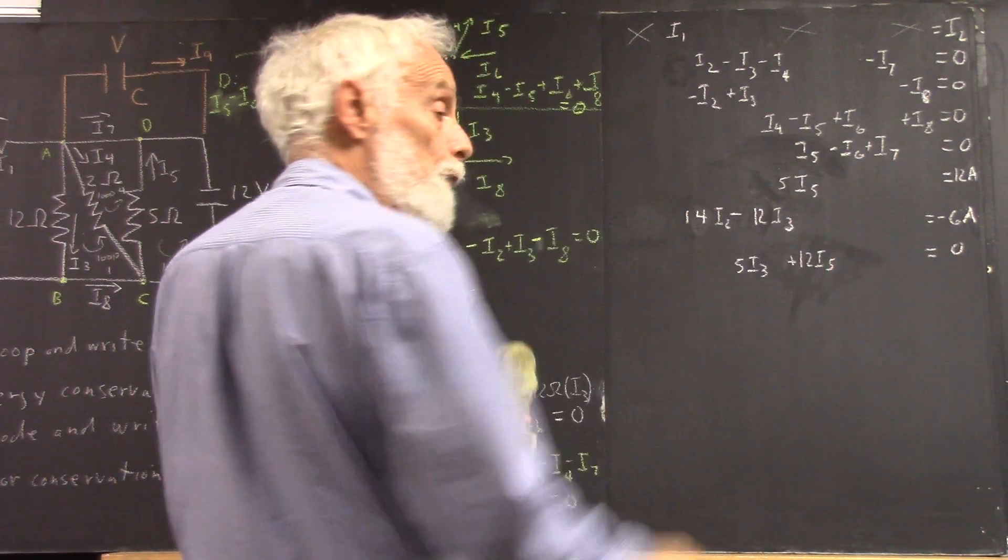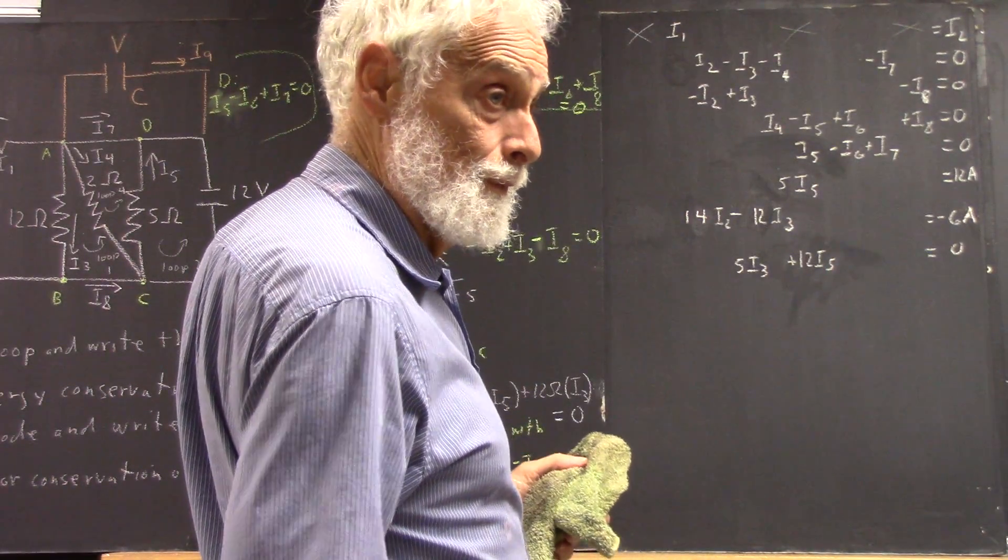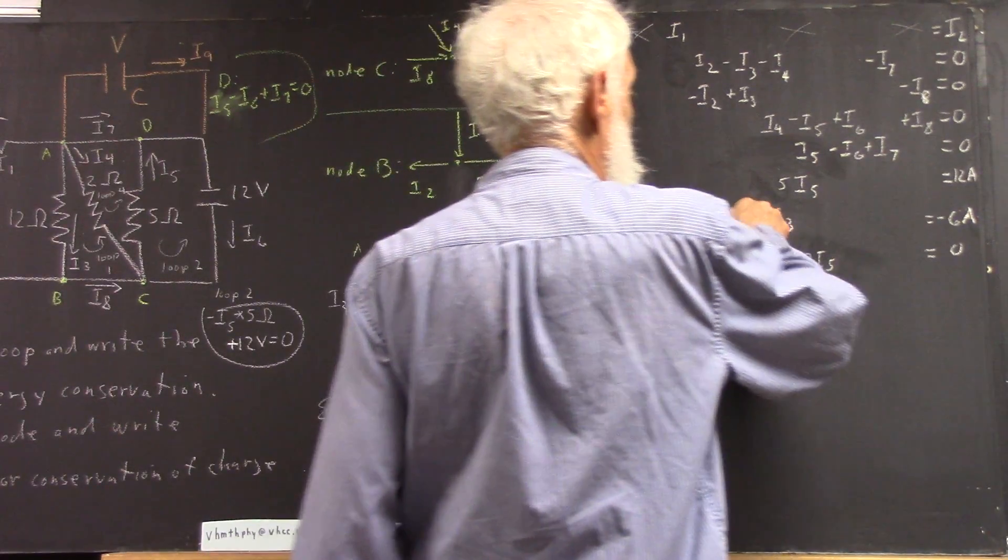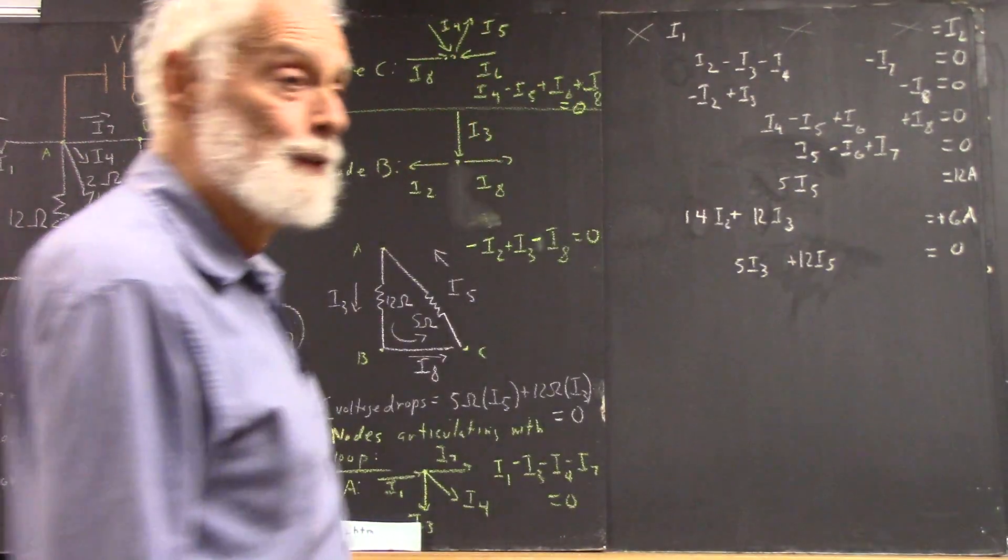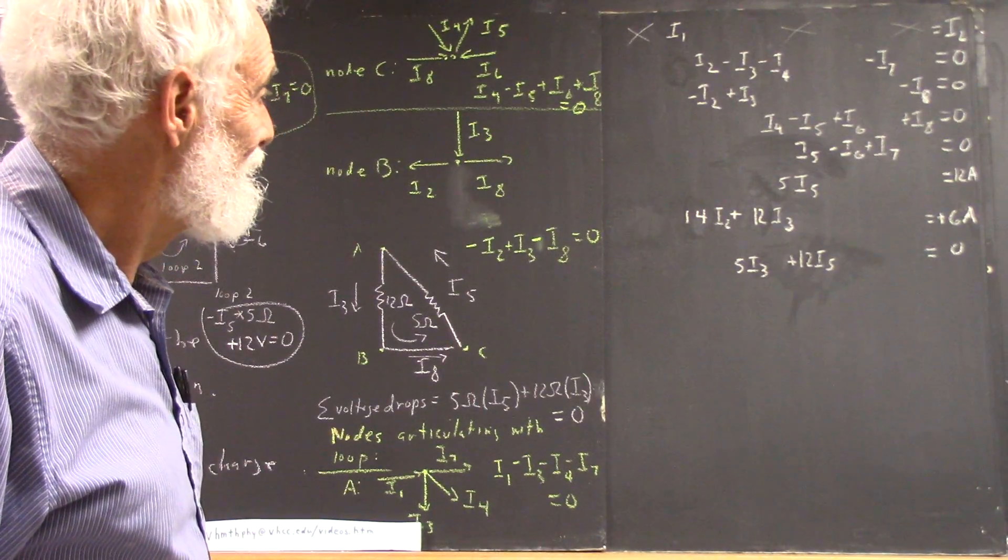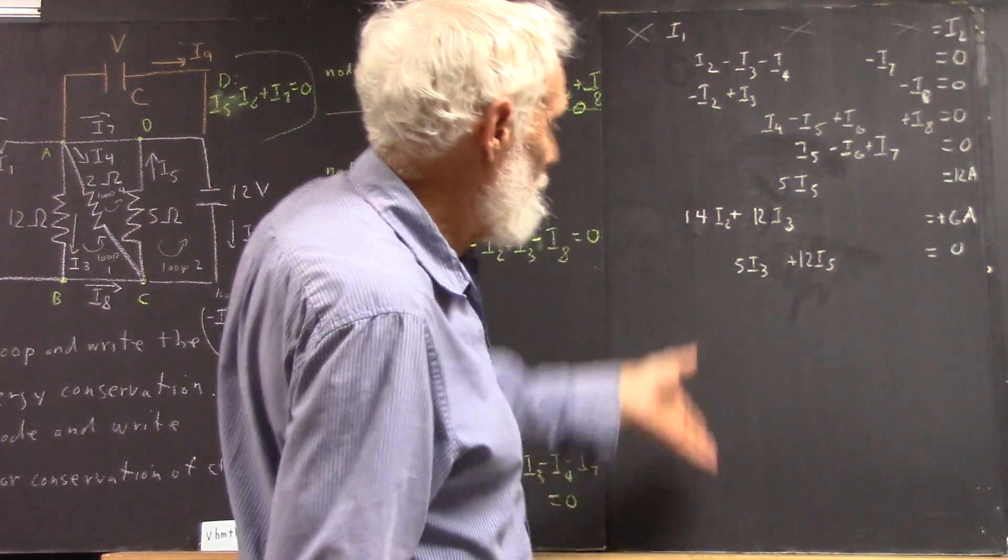Now, there would really be a negative 14, but I'm going to change all my negatives to positives because it needs all the negatives. Okay? So now, you see, I can wipe out I2, right?